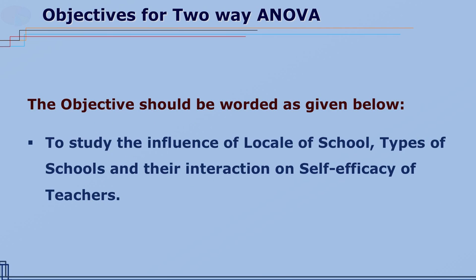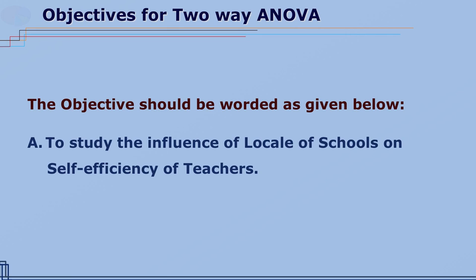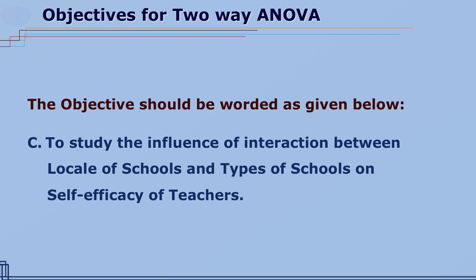How to write an objective for two-way ANOVA? The objective should be worded as: to study the influence of locale of schools, types of schools, and their interaction on self-efficacy of teachers. The same objective may be written as separate sub-objectives: (a) to study the influence of locale of schools on self-efficacy of teachers, and (b) to study the influence of types of schools on self-efficacy of teachers.